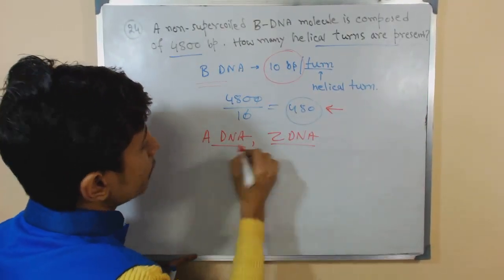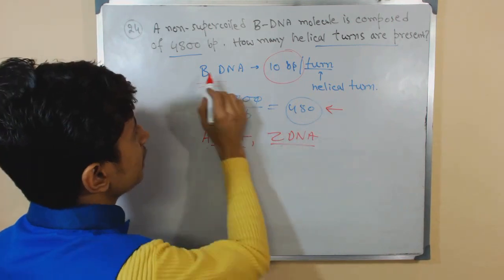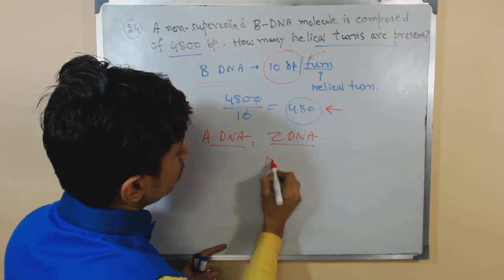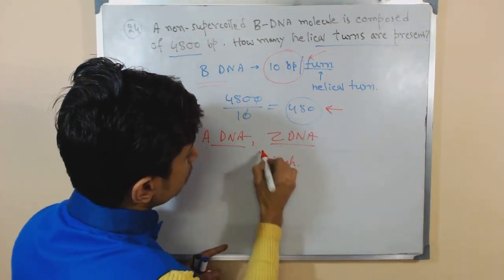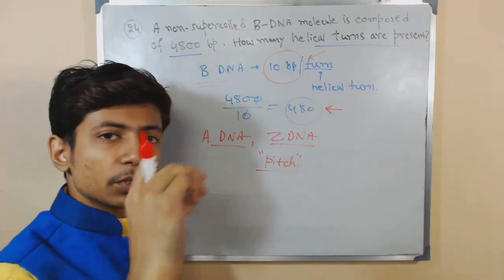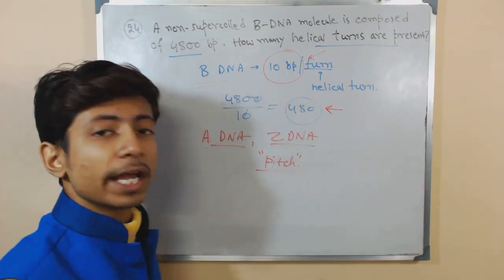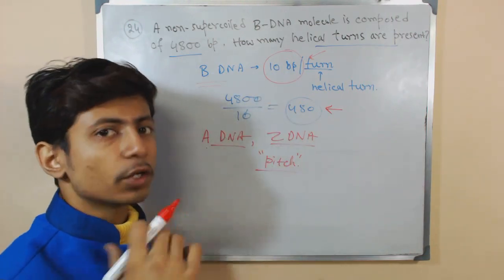You need to memorize those parameters for A-DNA, Z-DNA, and B-DNA. The parameters are: one thing is the number of base pairs per turn, and also you need to remember the pitch, that is the distance between two turns. You need to remember these two parameters for all three kinds of DNA, then you are good to go for any competitive exam.